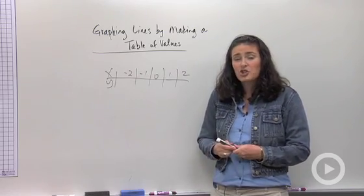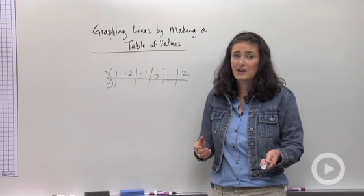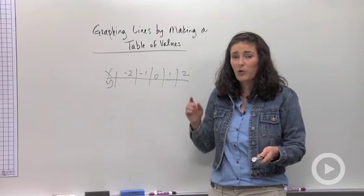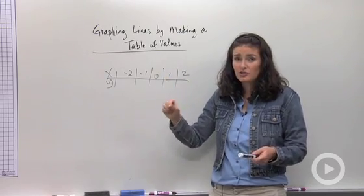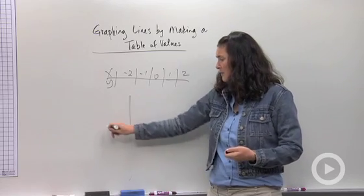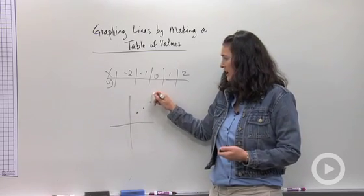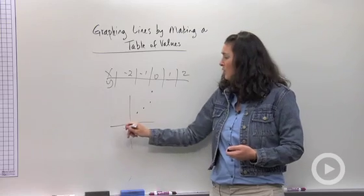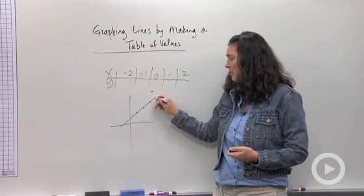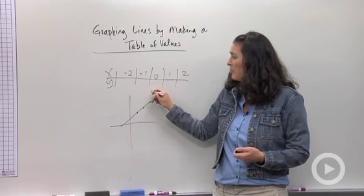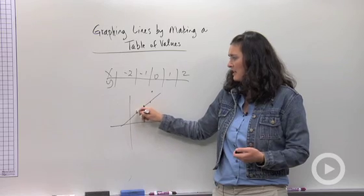One thing I want to make sure I point out to you guys before you start this process is that you want your points to be ruler straight. Here's what I mean. Let's say I get my points on there and they look kind of like this and I have one that's kind of like out there. Well these three are straight so that's probably what the line looks like. But this point I probably made an error.